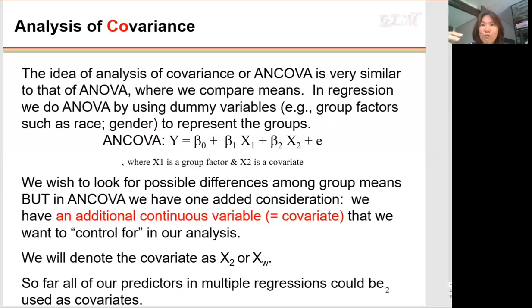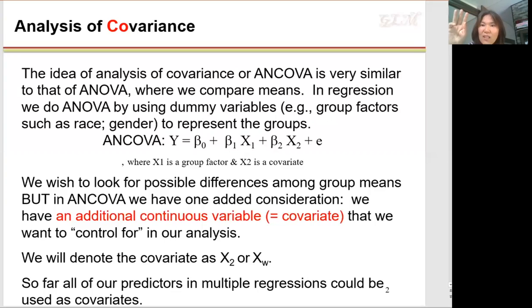But if you have more than two categories in the categorical variable — for example, urbanicity: urban, suburban, and rural, three categories — then it is an ANOVA model.